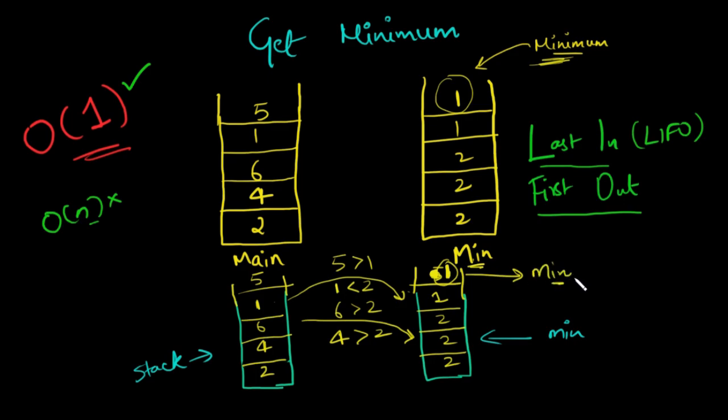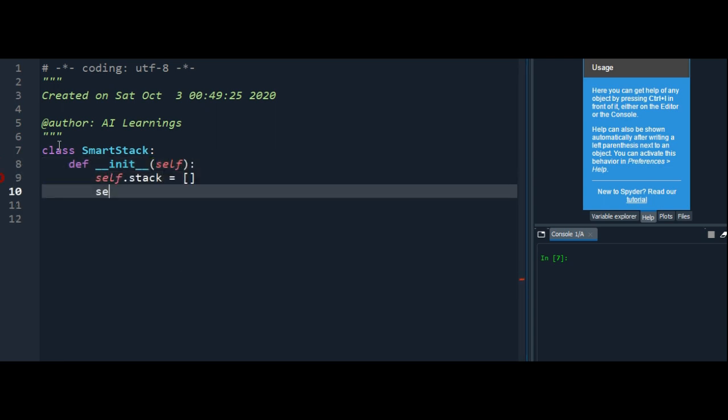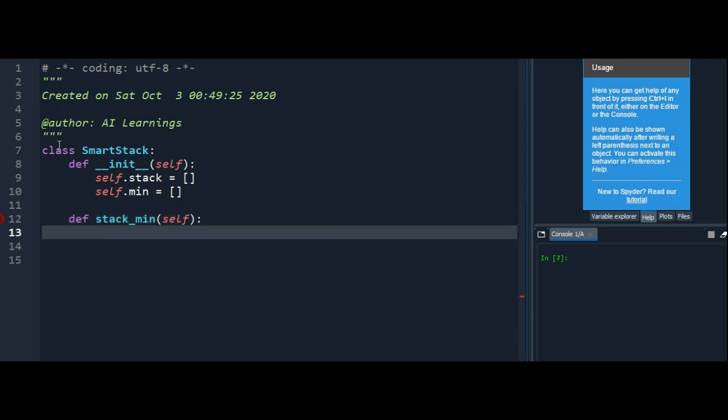Let me just code it for you. First, we'll create a class called SmartStack. Then I'll define a constructor which will have two lists: stack and min. Stack is the main list and min is the auxiliary list. Then I'll create a method called stack_min which will return the last element in the min list. That means the topmost element in the auxiliary stack.